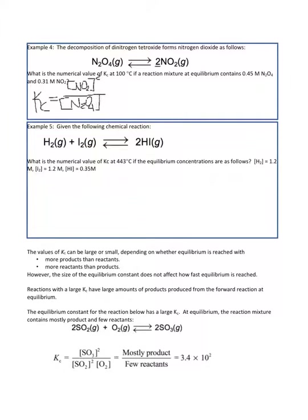There's only one reactant, N2O4, raised to the power of its coefficient, which is 1. Remember that anything raised to the first power is just itself. So we put in numbers: NO2 is 0.31 molar, so 0.31 squared, divided by 0.45. Make sure to use parentheses, particularly because you have things raised to various powers divided by other things. We get a Kc of 0.214.